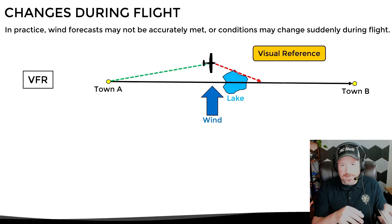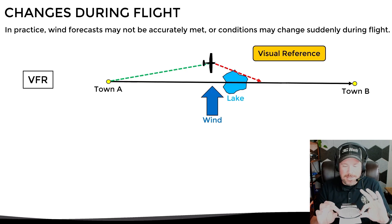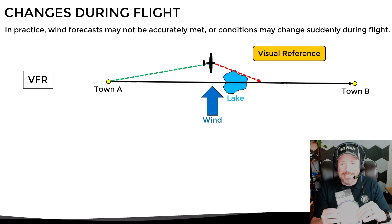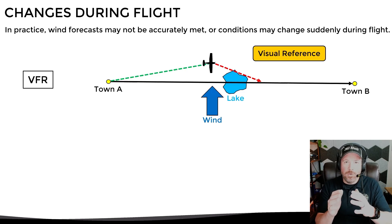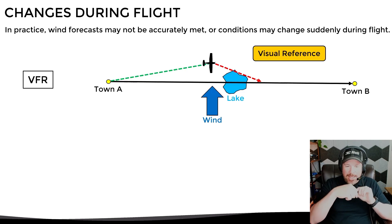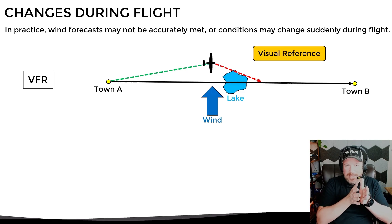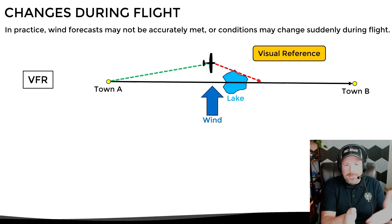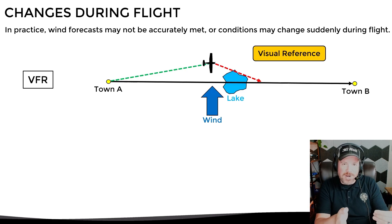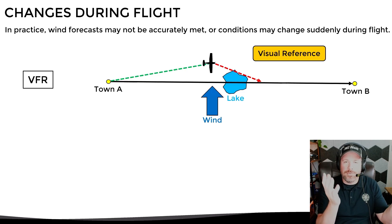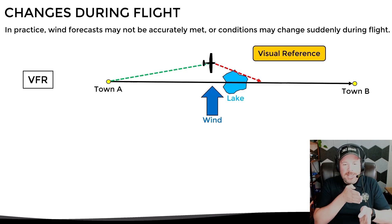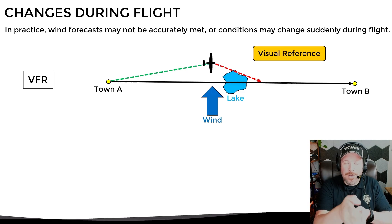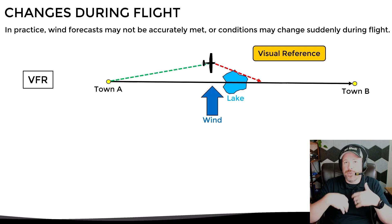The whiz wheel, the E6B back on the back side — the wind calculation side — we'll go over all of that, how to calculate what your true heading will be. What your heading from point A to point B without any wind would be, like 090. But with 10 knots of wind from this direction, it's actually going to be minus three degrees or plus four degrees, or whatever it happens to be, to find that wind correction angle to get you to track true to your destination.